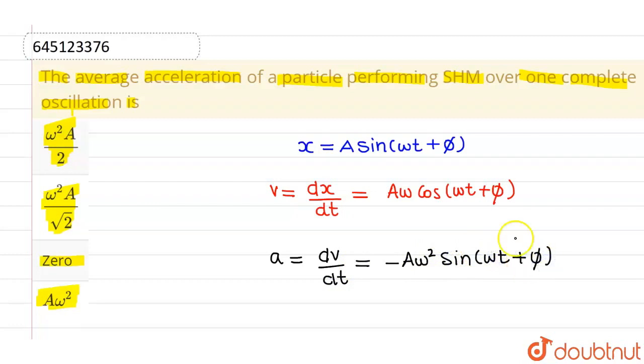Now what we have to find out? We have to find out the average acceleration. So average acceleration will be given by minus A omega square into average value of sin omega t plus phi.